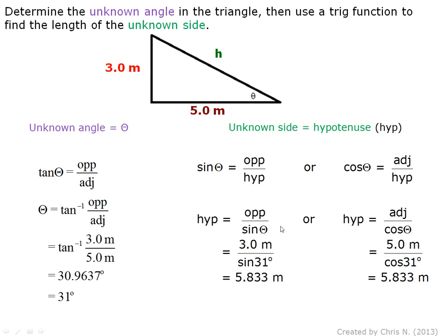Isolate the hypotenuse of the equation, substitute the numbers, then we will get the same answer of 5.833 meters for both equations. The unit is retained, and in the correct significant figure it is 5.8 meters.